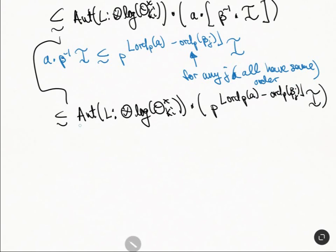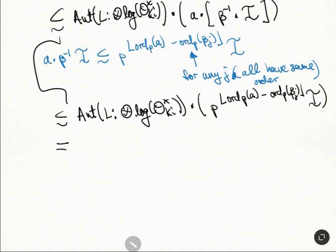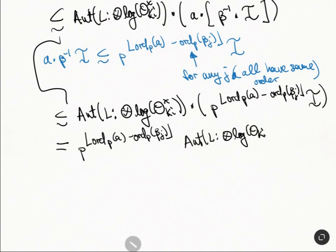This is Q_p-linear, so this is actually equal to p^(ord_p a − ord_p beta_j) times out-l, log OKi cross. I could have replaced this with I here — this thing is just equal to I as well — and we can keep this to be the same, so this is just I.